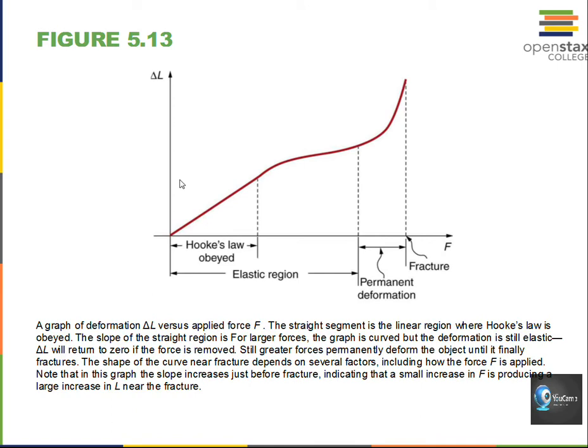And we model this region in here with f equals minus kx. Now the minus sign is just there to remind us that when we stretch a spring in one direction, the spring is going to pull back in the other direction. So that minus sign just tells us there's a restoring force, the force that would like to bring the spring back to its starting condition.